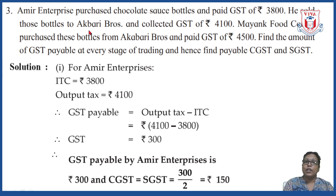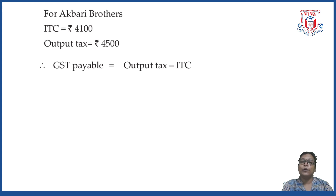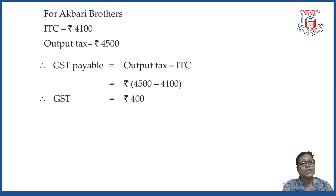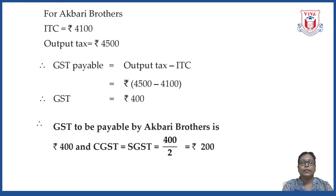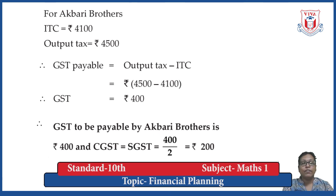Now for Akbari Brothers: ITC equals rupees 4,100 and output tax equals rupees 4,500. GST payable equals 4,500 minus 4,100 equals rupees 400. Therefore, GST payable by Akbari Brothers is rupees 400, and dividing by 2, CGST and SGST are each rupees 200. So we have found GST, CGST, and SGST for both stages.